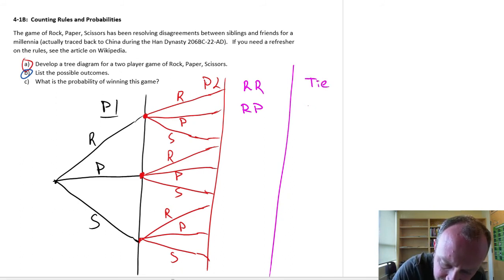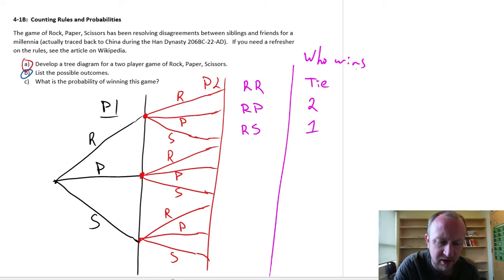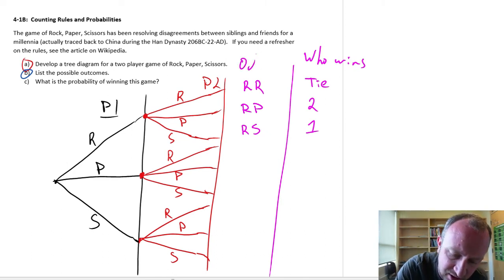Paper covers rock, and in this case, this is rock and scissors. So player one wins. So this is my column of who wins, because I'm going to need this for part C. We're going to need to know who wins. So this is my column of outcomes.